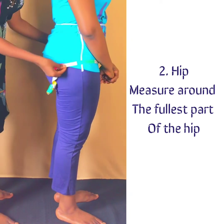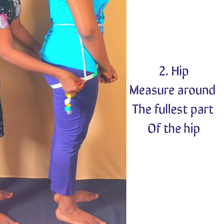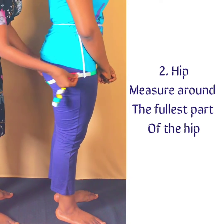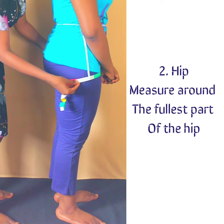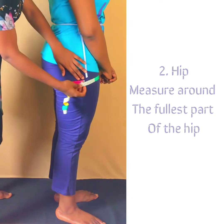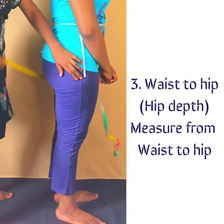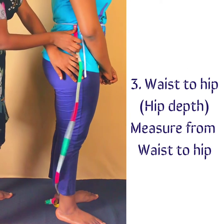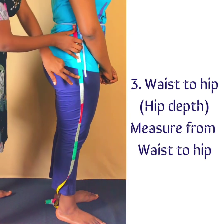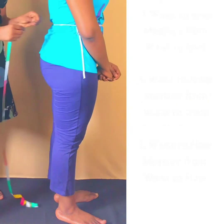The next thing is to measure around the fullest part of your hip. Wiggle the tape up and down, and when you get to the part where you realize it's the fullest, take that measurement. Then put your hand there and measure from the waist down to that point, which gives you your waist-to-hip measurement.